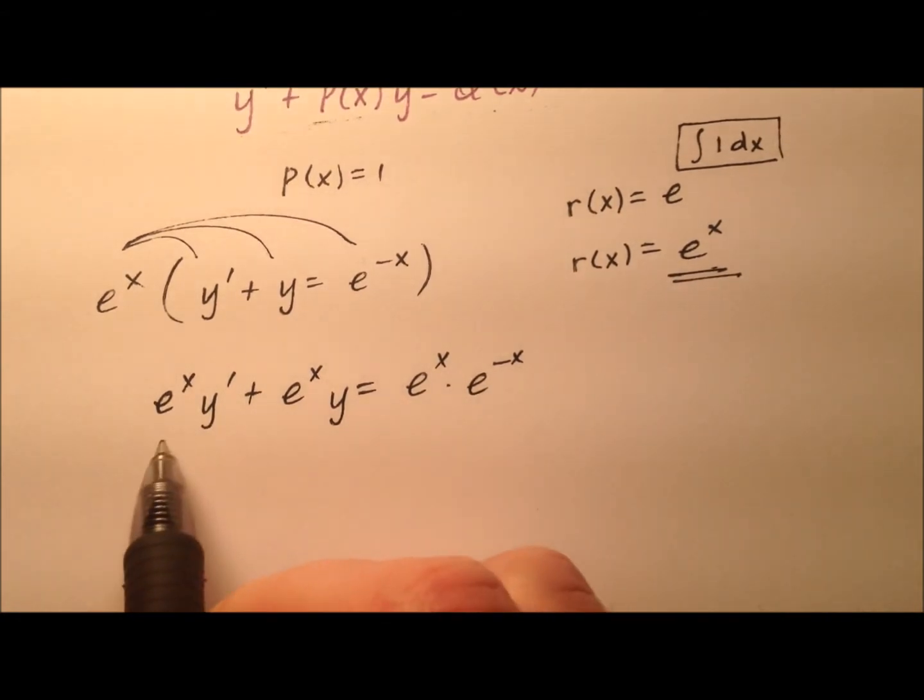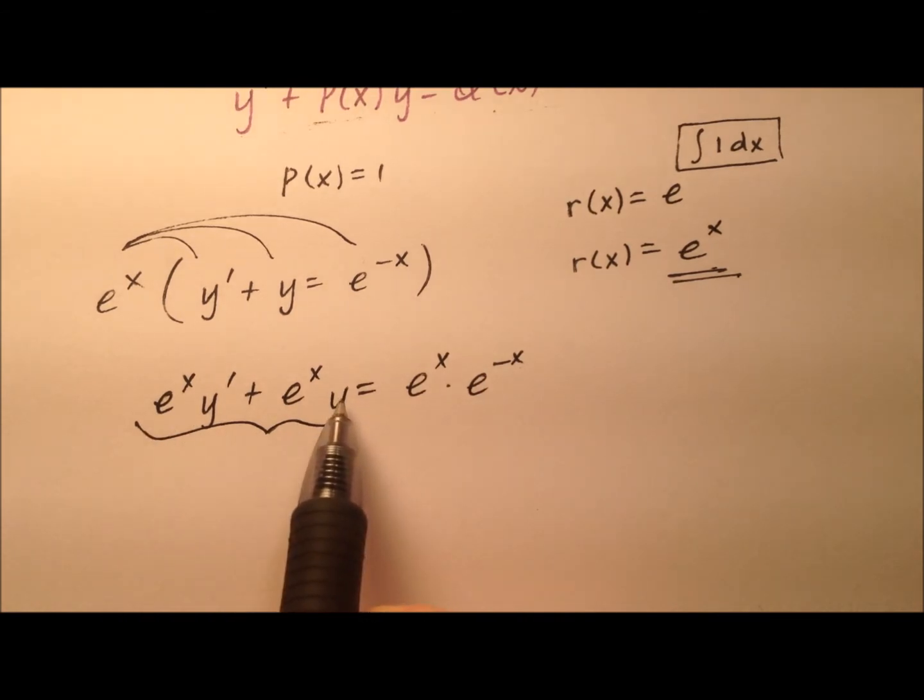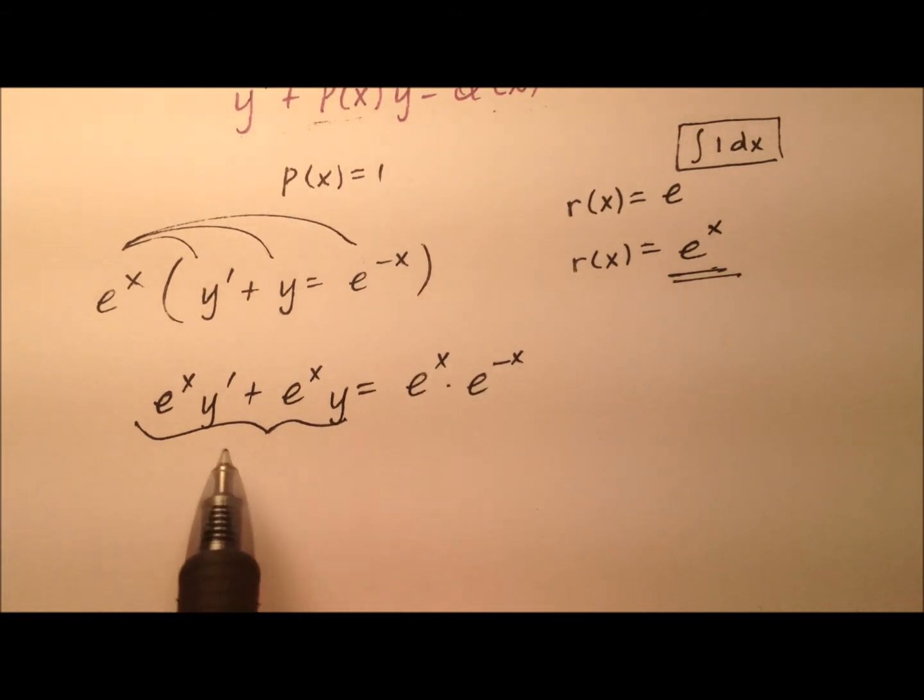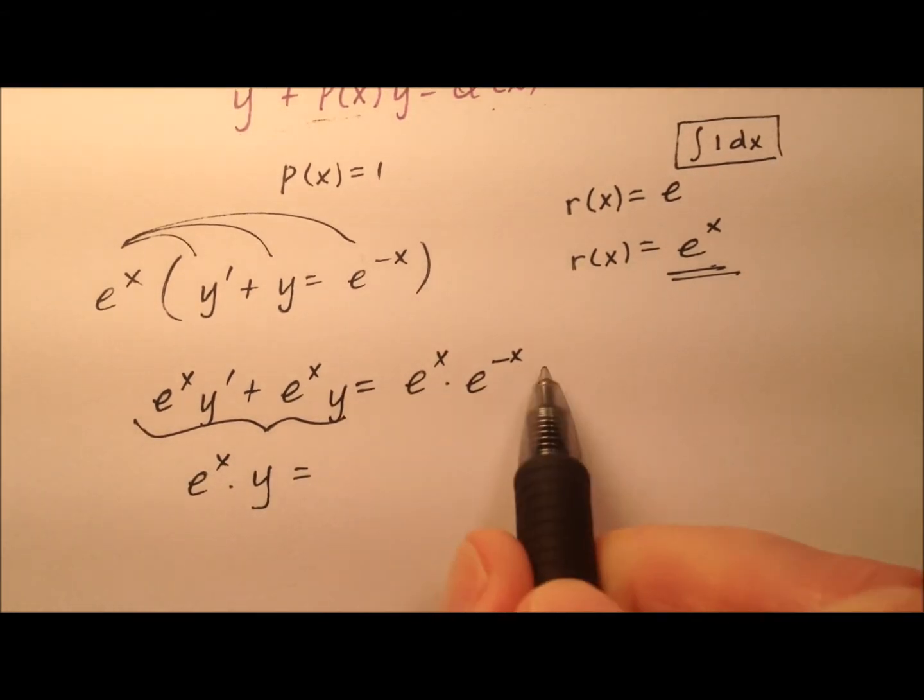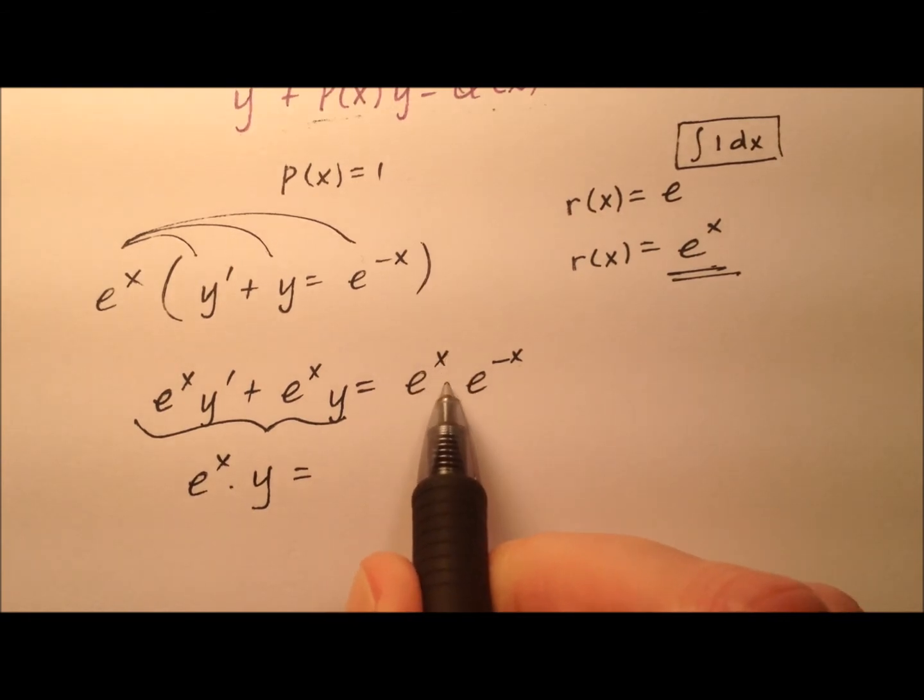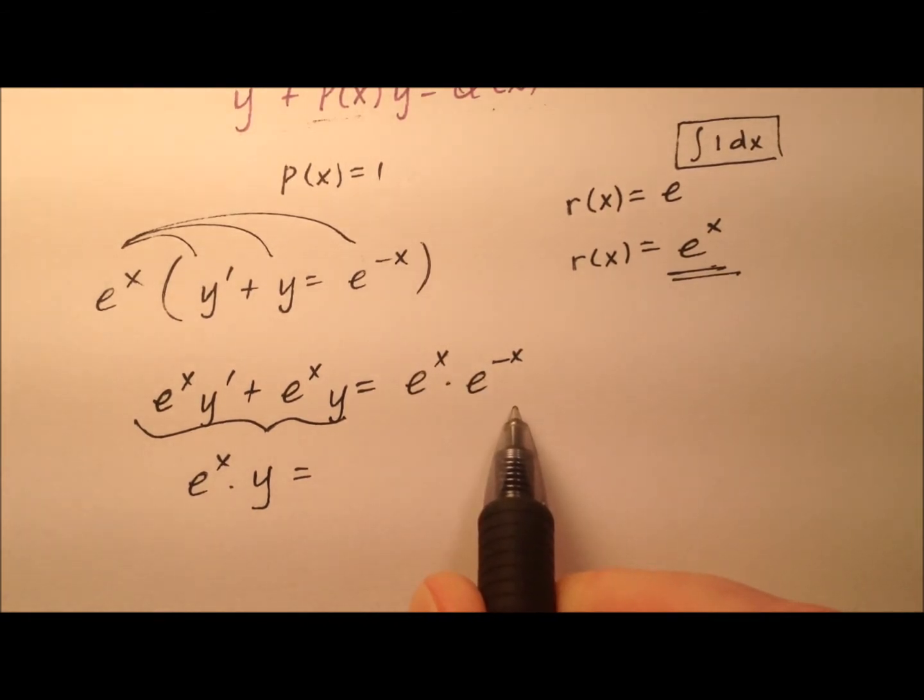Well a couple things here, on the left side it looks like the product rule has been employed, and again this is why we use our integrating factor and why we solve these linear equations this way. It's because it becomes e^x times y when I integrate that left side. The right side, however, e^x times e^(-x), we'll use an algebraic property of exponents here.